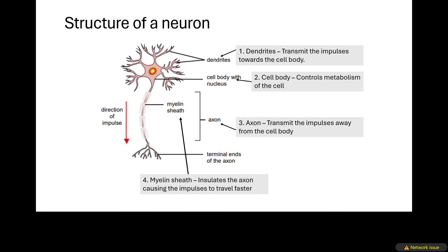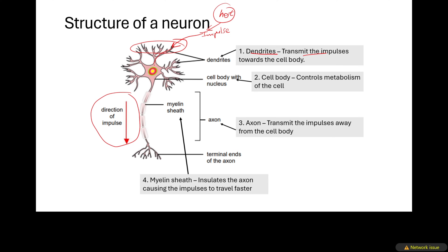Neurons transmit impulses — just a message about some external environment, for example when it is hot. Looking at the structure of the neuron, we see this part called the dendrite, which looks like a tree-shaped part. The dendrites transmit the impulses towards the cell body. The impulse moves through the dendrites in the direction of the cell body.